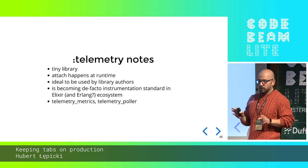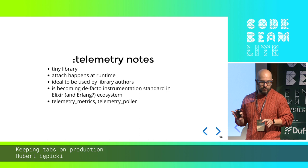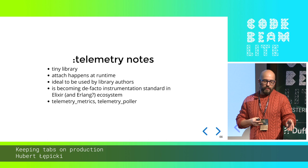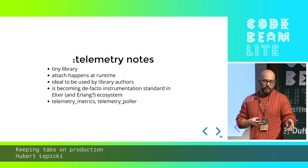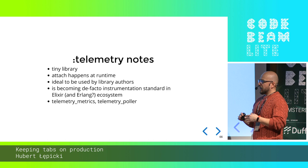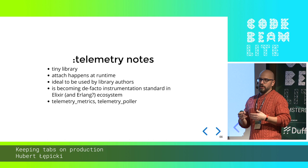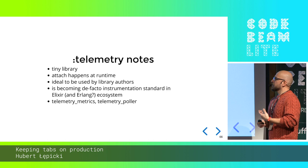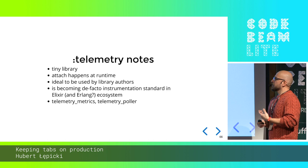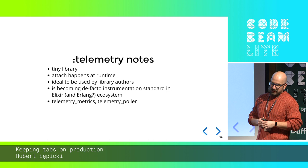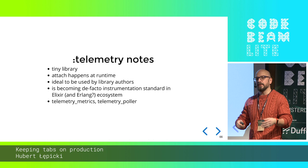Telemetry is becoming the de facto instrumentation standard. There are two side projects: telemetry metrics and telemetry poller. Telemetry metrics provides type definitions for metrics — counter, sum, distribution, etc. — though the actual calculations like standard deviation must be done in the reporter or backend. The poller is a GenServer that wakes up every N seconds, collects metrics, and generates telemetry events that are sent by the reporter. The poller can collect information like how much memory is being used, how many processes are running, and similar system-level data.